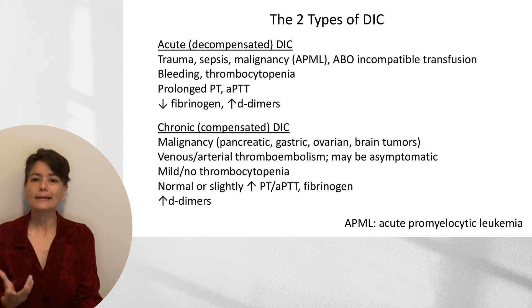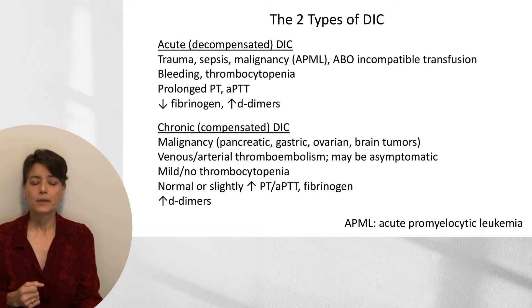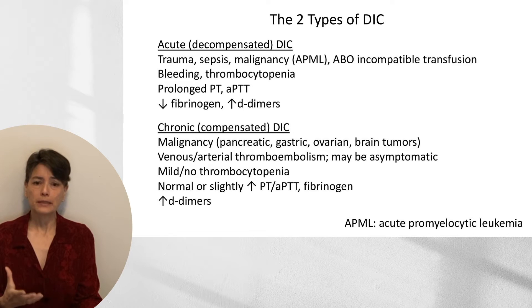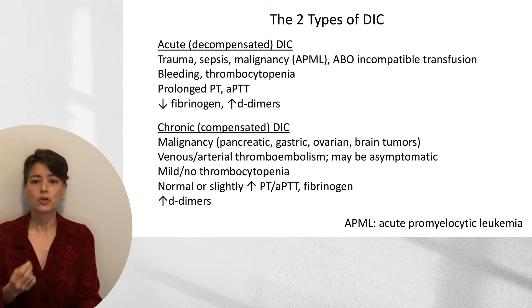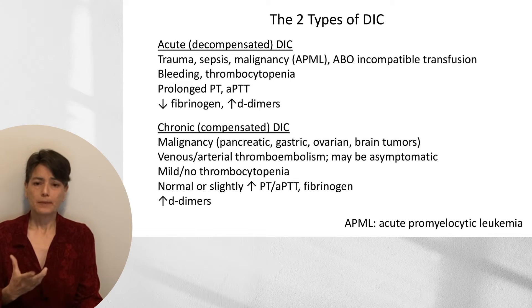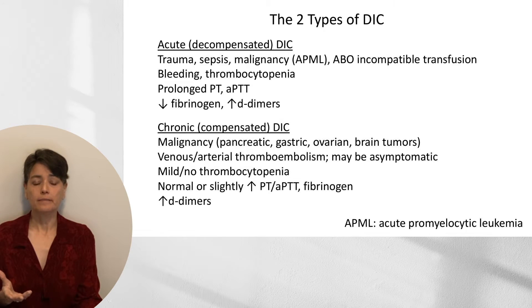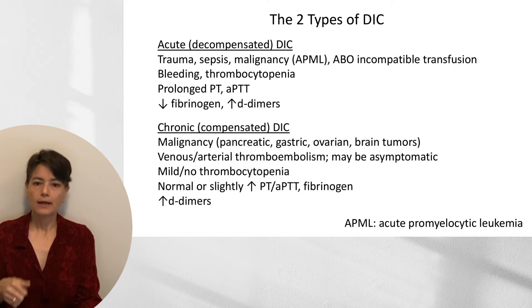There are two main types of DIC: acute or decompensated DIC, and chronic or compensated DIC. Either can present with bleeding or thrombosis, but they have typical presentations. Acute DIC typically arises following trauma, sepsis, in the context of acute promyelocytic leukemia, or following an ABO-incompatible transfusion. Patients typically present with bleeding, and lab tests show thrombocytopenia, prolonged PT and APTT, decreased fibrinogen, and increased D-dimers.